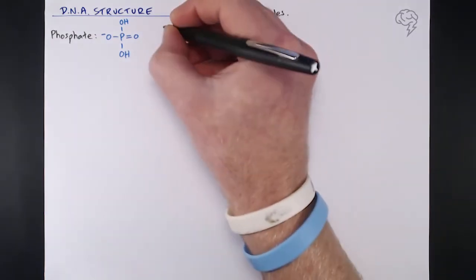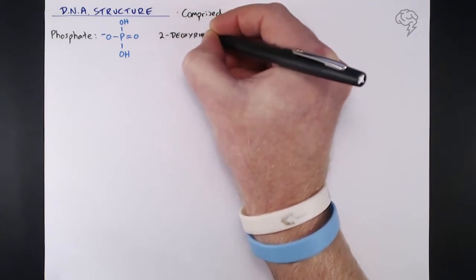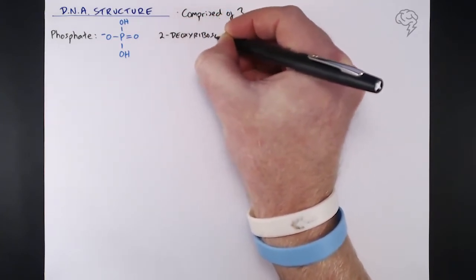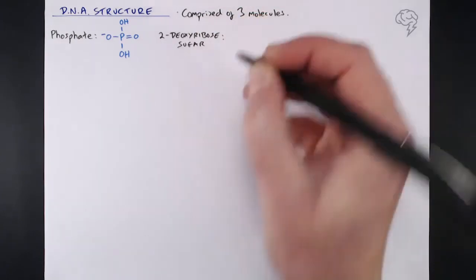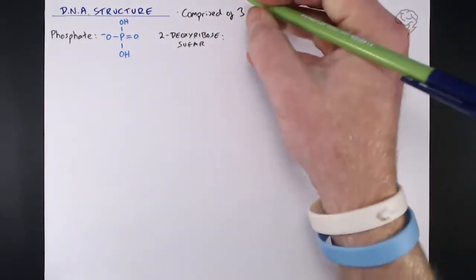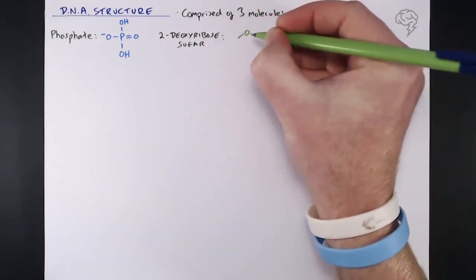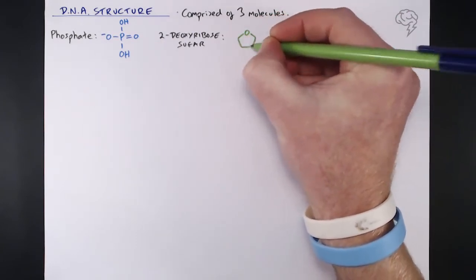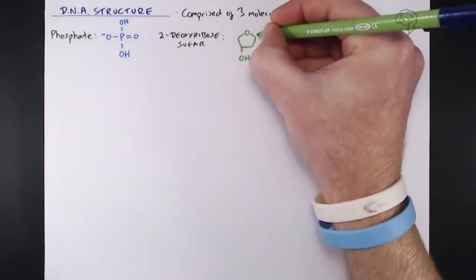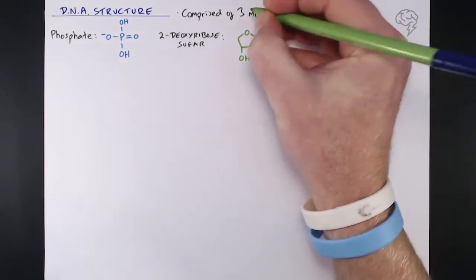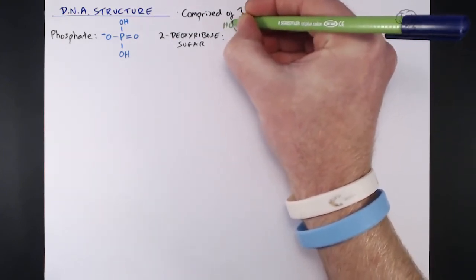Secondly we have what's known as 2-deoxyribose sugar, or deoxyribose for short. This is a five-carbon molecule — you can see that pentagon shape — and we've got three OH groups coming off it. That's really important because they're going to get involved in bonding when it comes to building our DNA molecule.